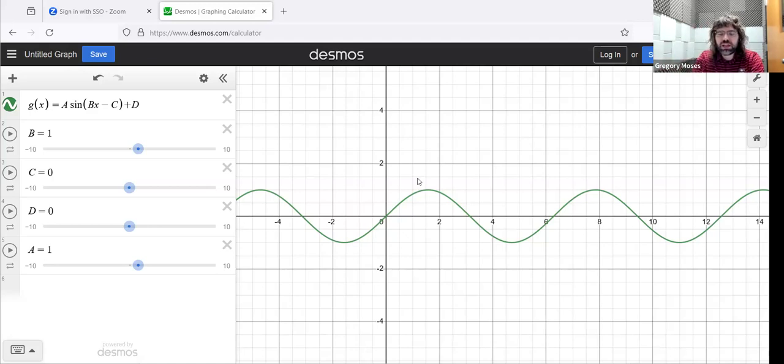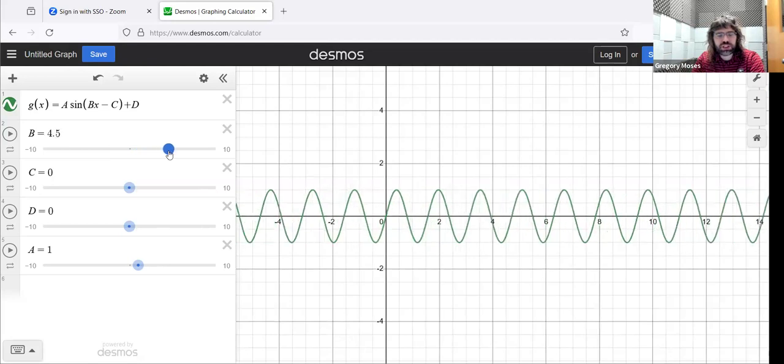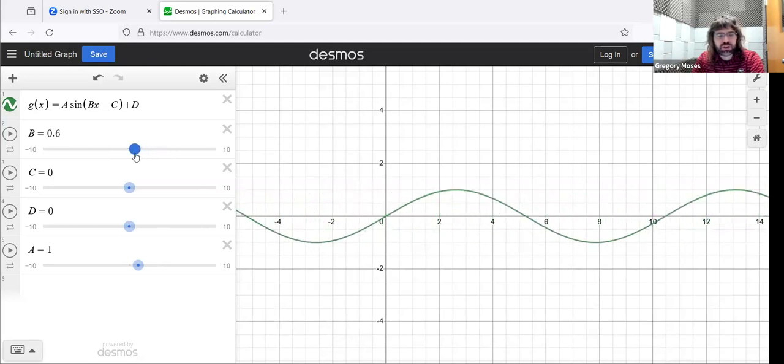So the period is going to be entirely controlled by just one of these parameters. And as it happens, this B controls the period. At least for the moment, let's look at positive values of B.